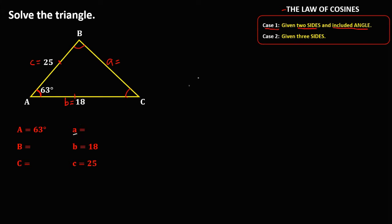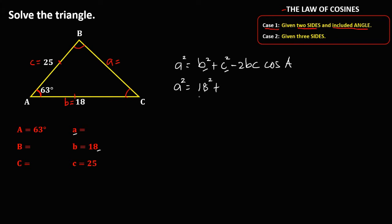First, solve for side A using the formula: A squared equals B squared plus C squared minus 2BC times cosine of angle A. Since A is unknown, we substitute: A squared equals 18 squared plus 25 squared, then minus 2 times 18 times 25 times cosine of 63 degrees.